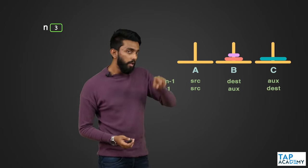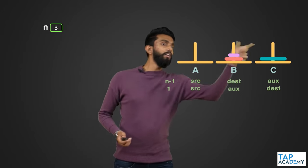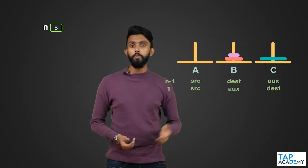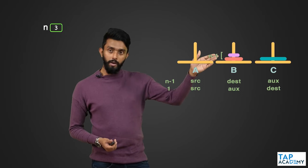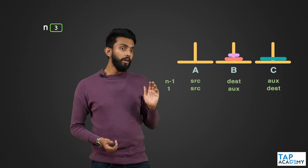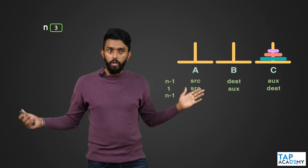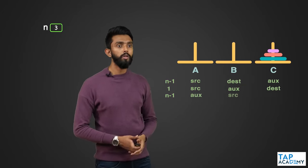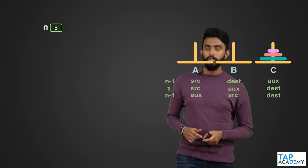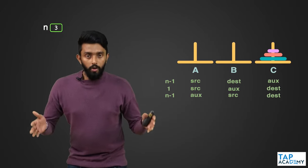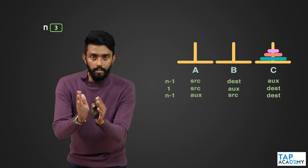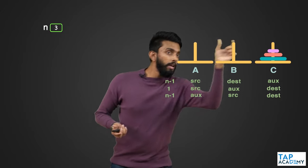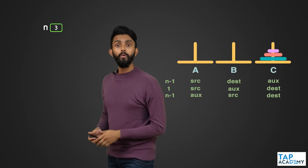So the Tower of Hanoi problem with n discs is broken into three subproblems: first, move n−1 discs from source to auxiliary; second, move 1 disc from source to destination; third, move n−1 discs from auxiliary to destination. This is exactly your recurrence relationship.